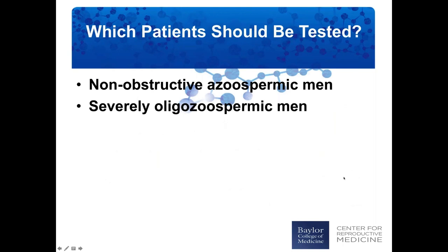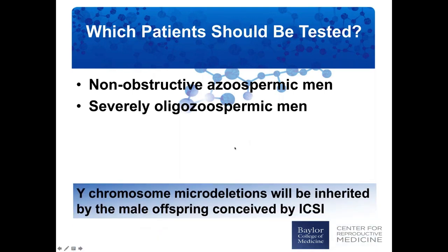Who should be tested for Y chromosome microdeletions? All men with non-obstructive azoospermia seeking to achieve a pregnancy with testicular sperm extraction and ICSI, as well as severely oligospermic men. It's important to remember that if an assisted reproductive technique is used for men with Y chromosome microdeletions, the Y chromosome microdeletions will be inherited by the male offspring conceived by ICSI, and those children will be infertile with a similar spermatogenic deficiency as present in the father.